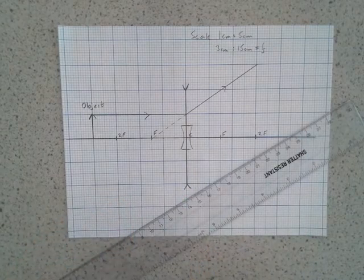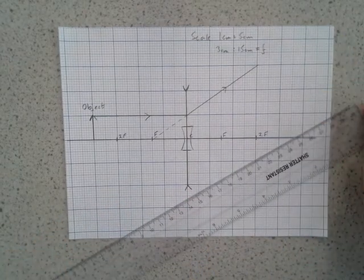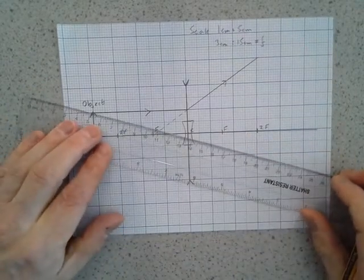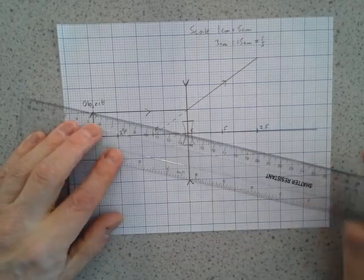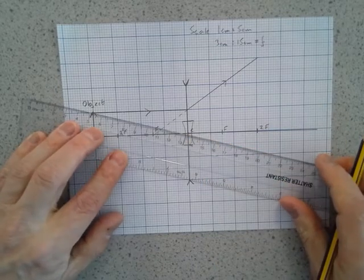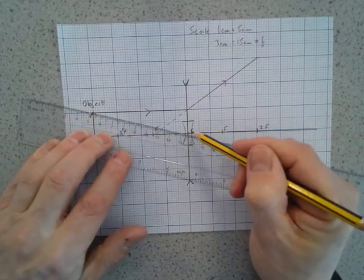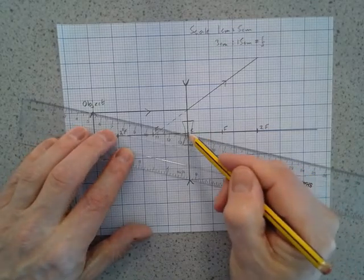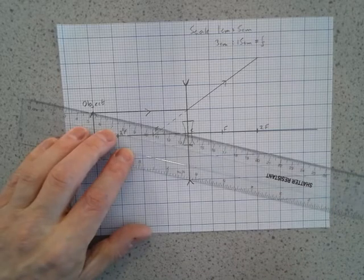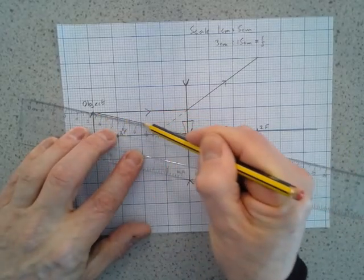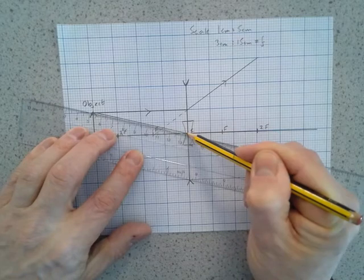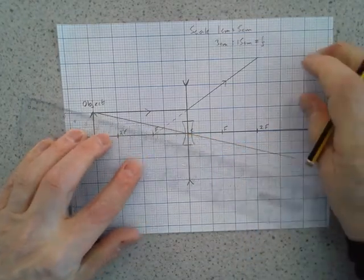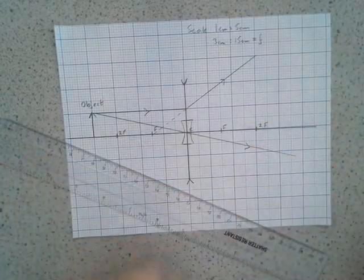The second ray we can draw is the ray from the head of the object that goes through the center of the lens. A thin diverging lens will behave in the same way as a thin converging lens. The center is parallel sided and therefore the ray passes through effectively undeviated, so it just goes straight through like that.